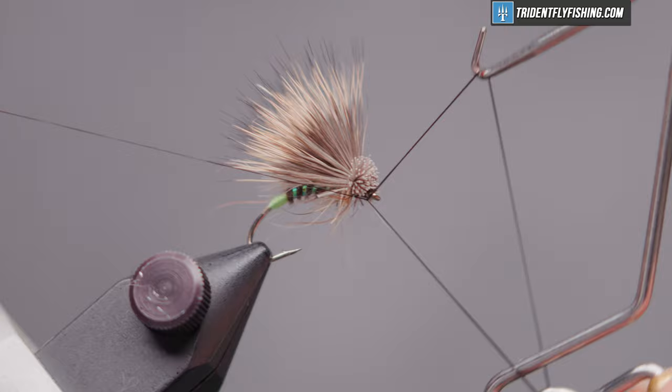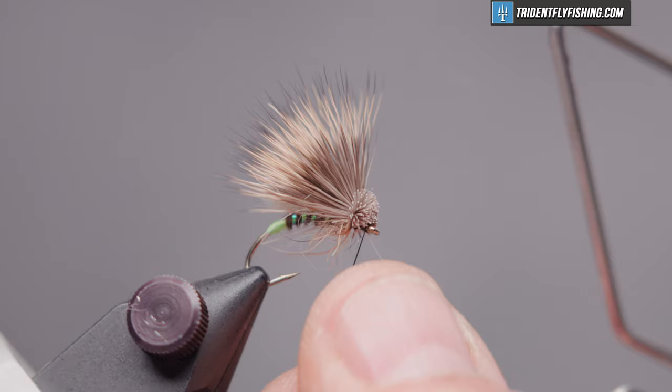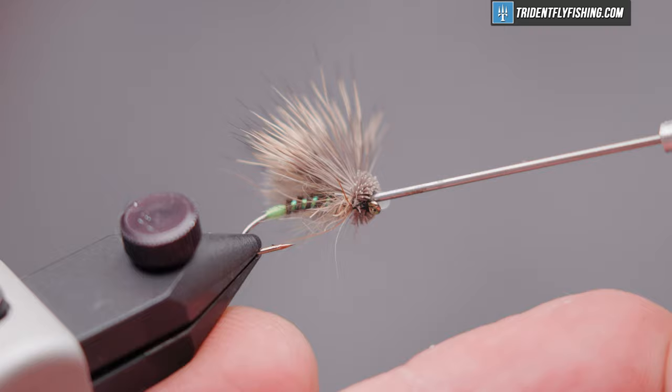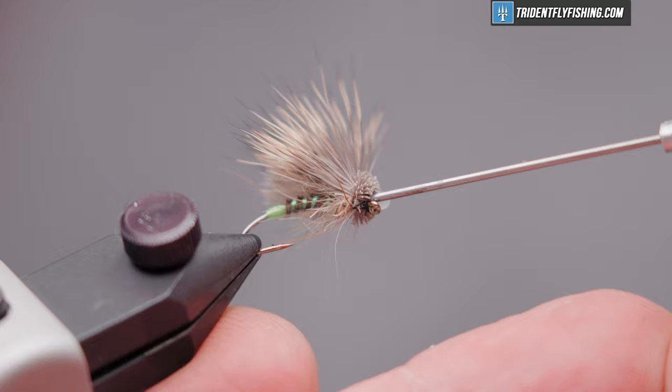Got our whip finish tool. Four or five turn whip finish. Seat our knot. And cut the thread. And some head cement. This is Loon's water based. That'll soak into that really good. A little flick cleans the material out of the eye. And our fly is finished.